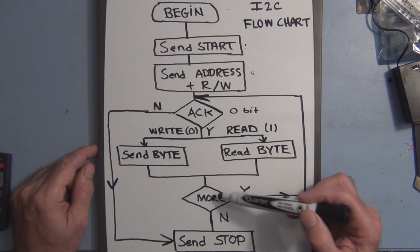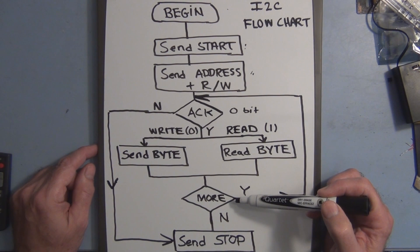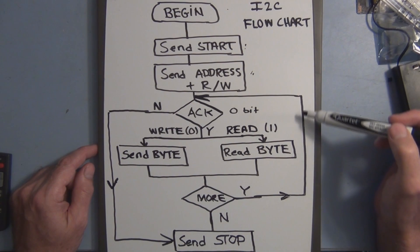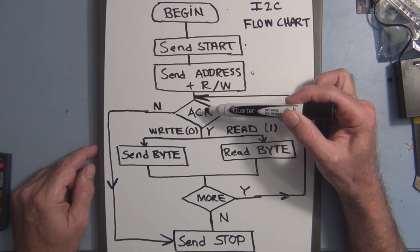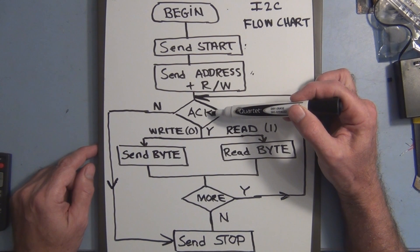And we come down here to a decision. Are we going to do any additional communication? We say yes. So we come back up and we go back up to just before acknowledge. And then it sends out another acknowledge saying it's ready to either read data into the slave or write data from the slave to the master.